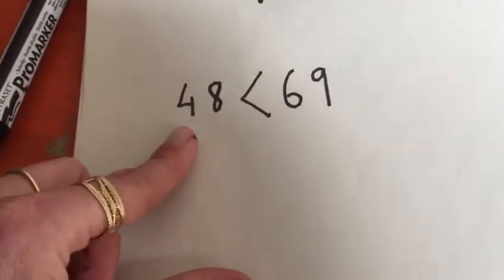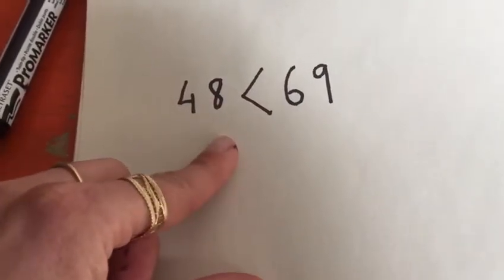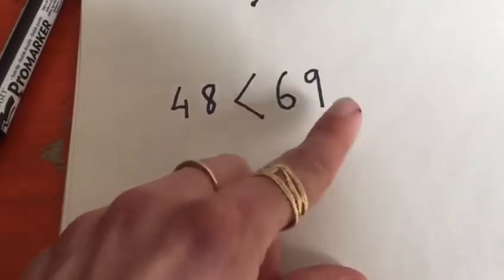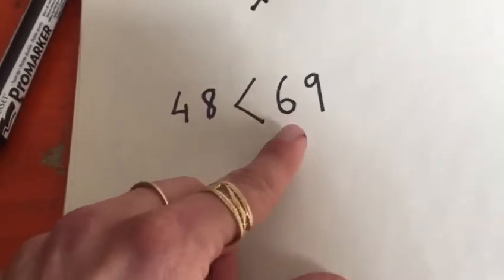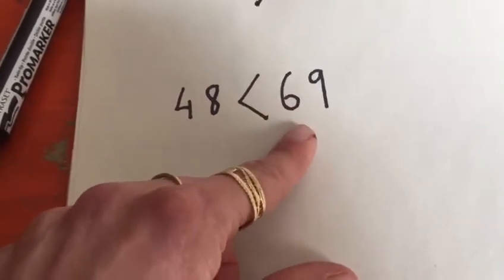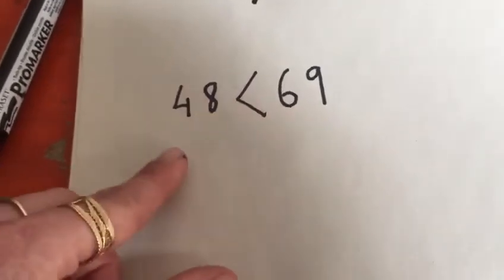I know this number has four tens and eight ones. This number has six tens and nine ones. So I know that this one is the bigger number because it's got six tens rather than four tens.